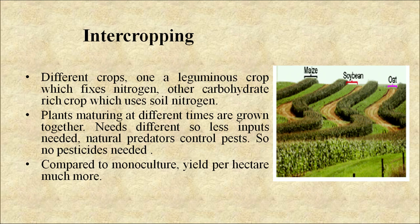Next is intercropping. Different crops — one leguminous crop which fixes nitrogen, and another carbohydrate crop which uses soil nitrogen — are grown together. Plants maturing at different times are grown together, so less inputs are needed. Natural predators control pests, so no pesticides are needed. Compared to monoculture, yield per hectare is much more.